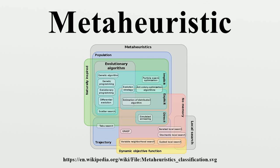Many different meta-heuristics are in existence and new variants are continually being proposed. Some of the most significant contributions to the field are: 1952 - Robbins and Monroe's work on stochastic optimization. 1954 - Barricelli carries out the first simulations of the evolution process and uses them on general optimization problems. 1963 - Rastrigin proposes random search. 1965 - Matyas proposes random optimization. 1965 - Nelder and Mead propose a simplex heuristic, which was shown by Powell to converge to non-stationary points on some problems.